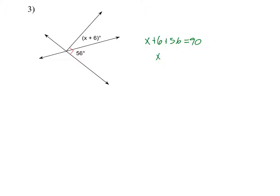So x equals 62, no, x plus 62 equals 90. So minus 62, that means that x equals 28 degrees.